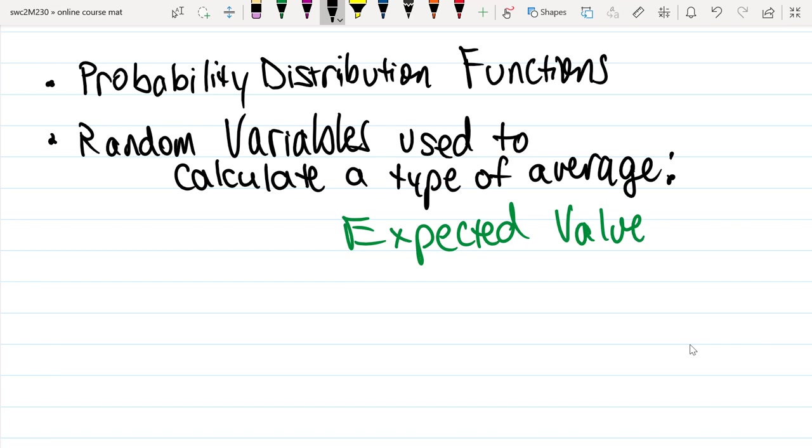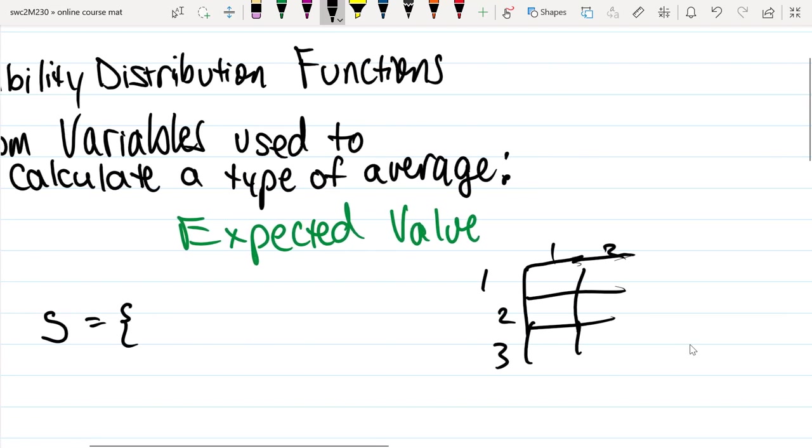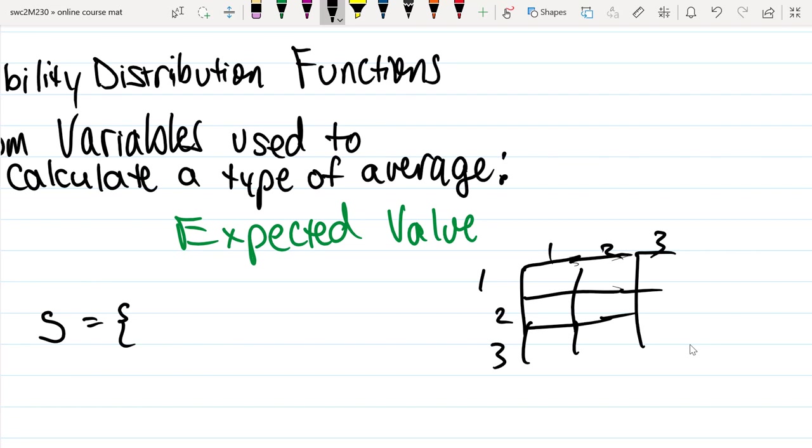For example, if you were to roll two dice, those values that you could get, the smallest you could get with two dice would be maybe a one and a one. And if you did that, let's say you have one die and another one, two, three. I'll just do a couple of values here: one, two, three.